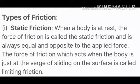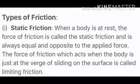When an external force is applied to move an object but the object remains at rest, it is because the external force is equal to the static friction, so the object cannot move from its initial position. The force of friction which acts when the body is just at the verge of sliding on the surface is called limiting friction — it limits our applied force such that the object is not able to move.